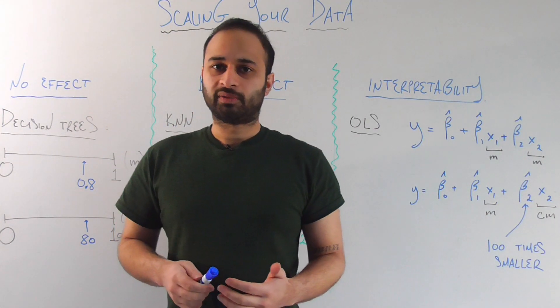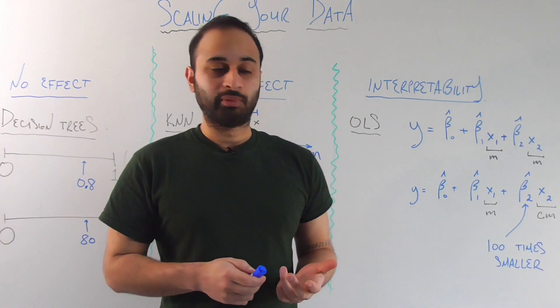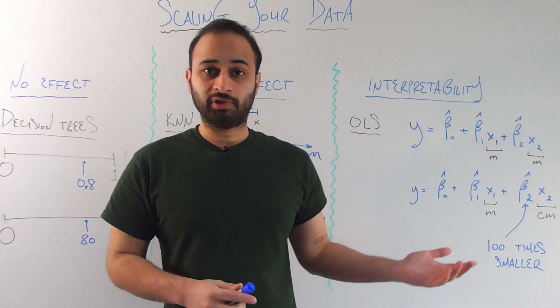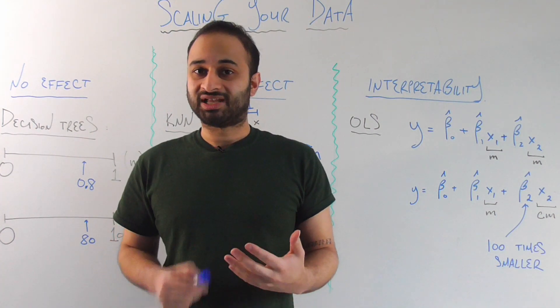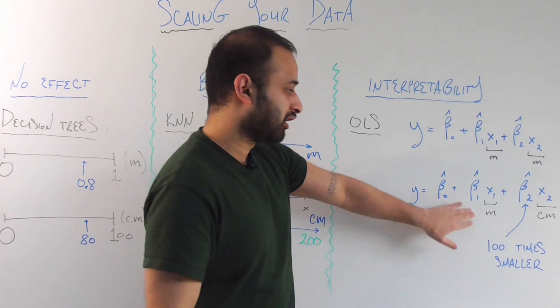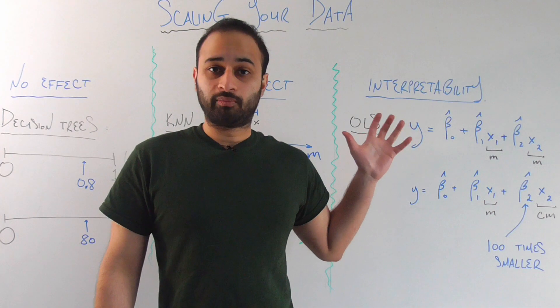And what does this mean for interpretability? If we weren't aware of the fact that our variables were on different scales, then we would think that beta1 is naturally just more important than beta2 because we are downscaling beta2 by a hundred, which would make it much less likely for it to be in absolute terms bigger than beta1. So this is where it affects your interpretability, but not necessarily your predictability.